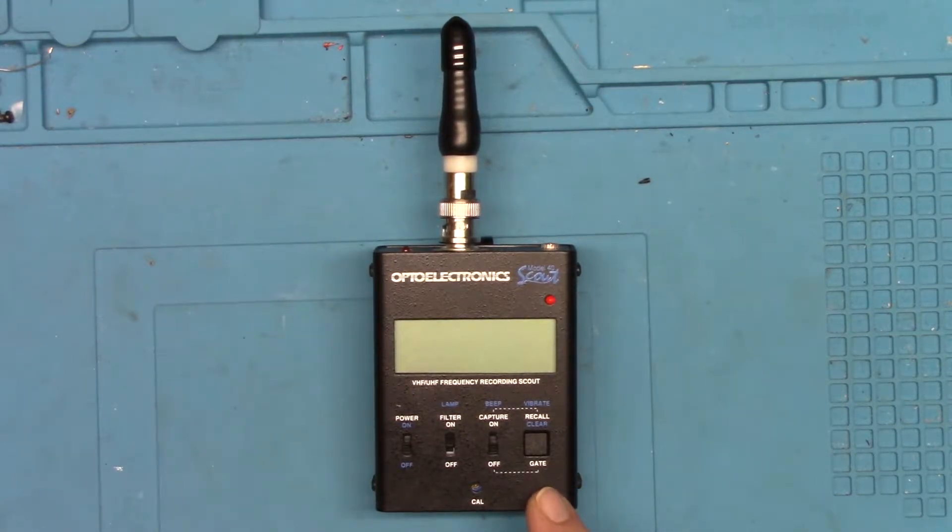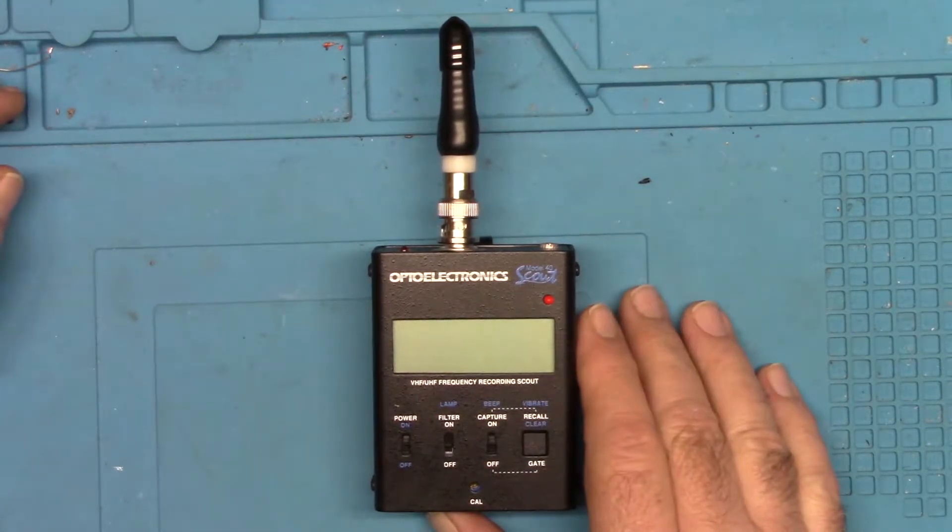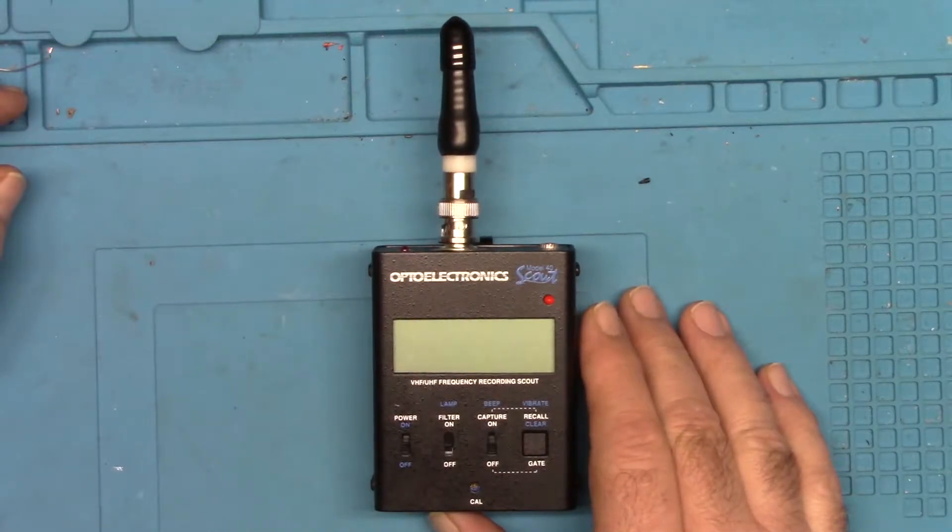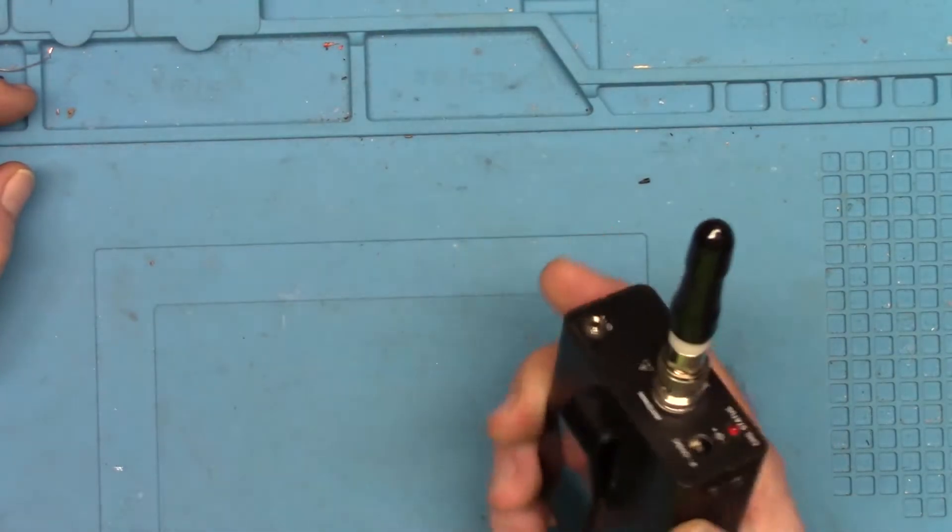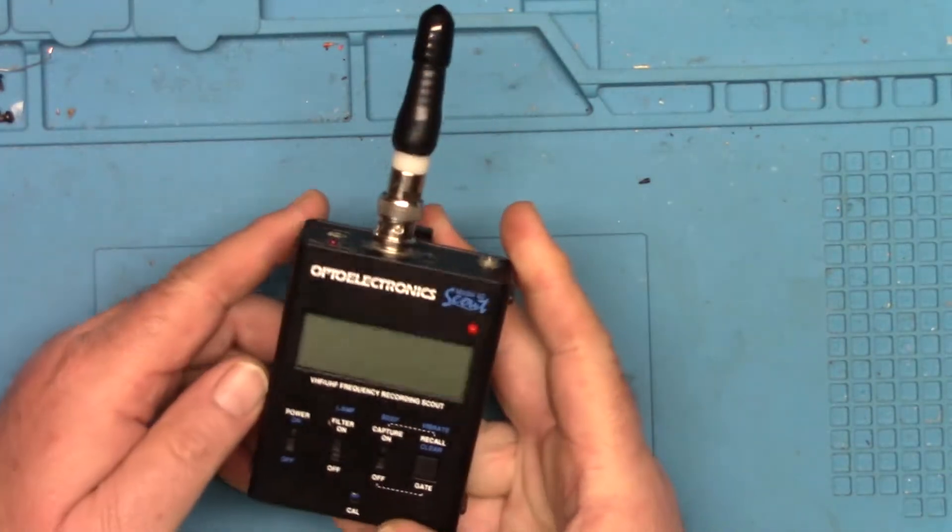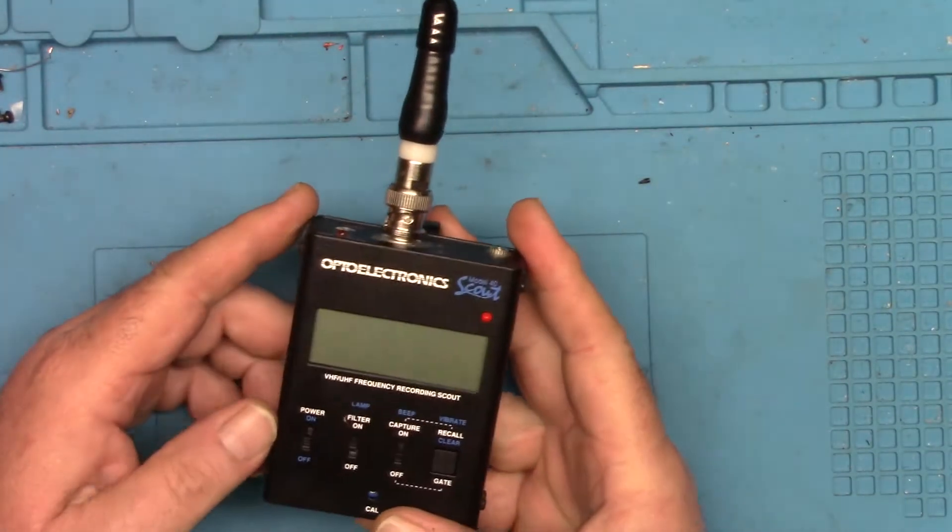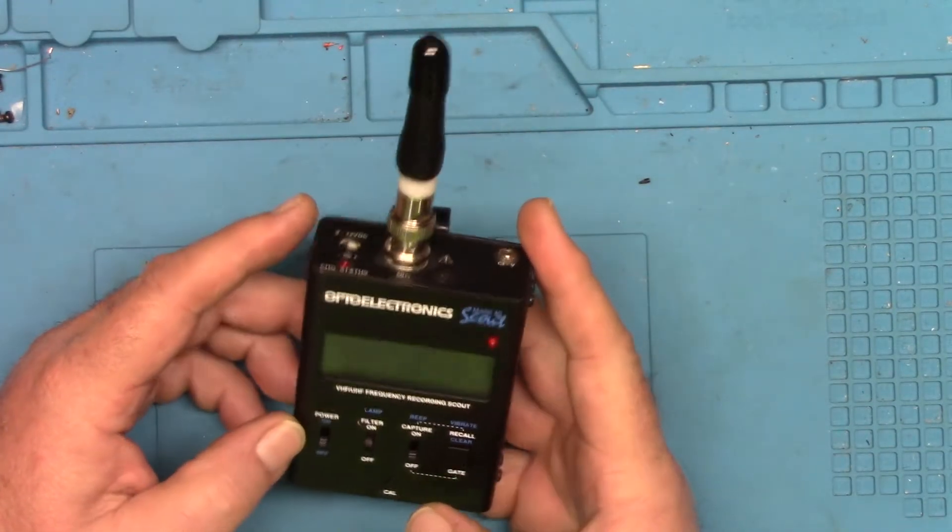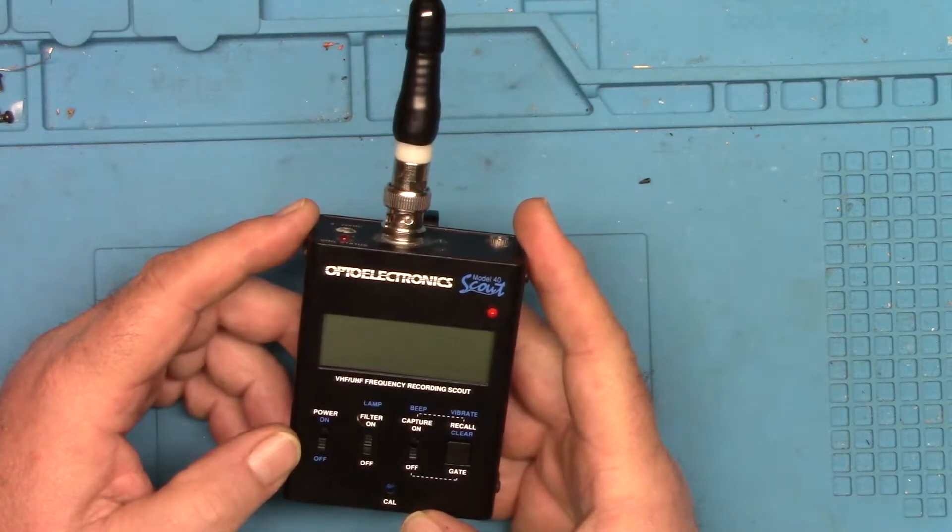This is an Optoelectronics Scout Model 40, and this is a frequency counter, a wireless frequency counter. It has several functions that it'll do.